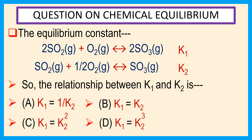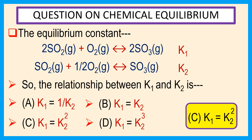The answer is C: K1 is equal to K2 square. The explanation we will see in the next slide.